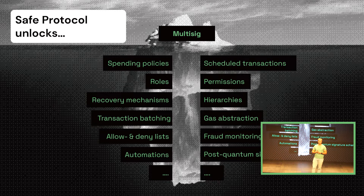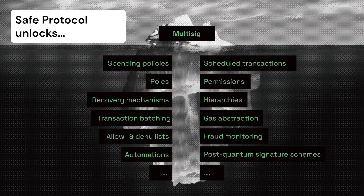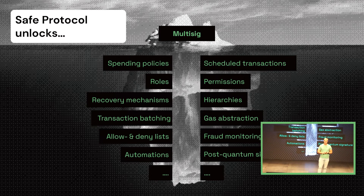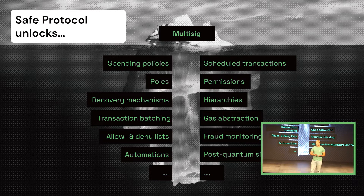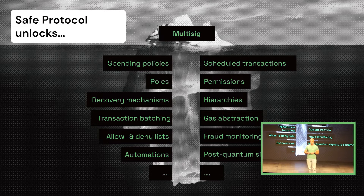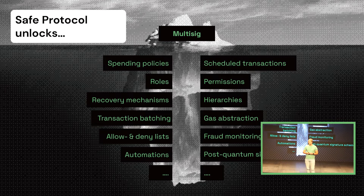One of the prime use cases with smart contract accounts today is having logic as part of your account that defines multiple private keys controlling it, not just one — also known as multi-signature wallets. As an individual, instead of having one private key to really protect, you can have multiple keys on different devices, different computers, maybe one backed up in a Swiss vault. This already enables much better OPSEC features.